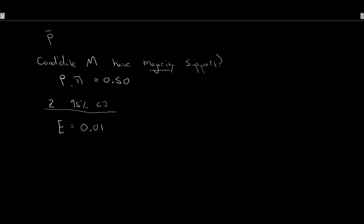The formula for minimum sample size for proportions is: N ≥ P(1 − P) · (Z / E)². That is: what we think the true population proportion is, times 1 minus that proportion, times the level of confidence squared, divided by the maximum allowable error squared.